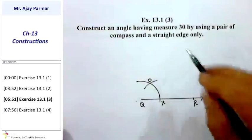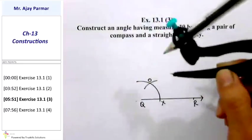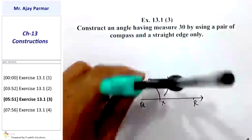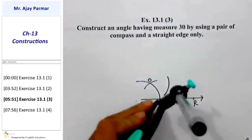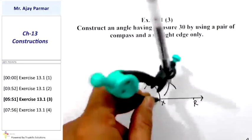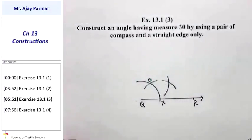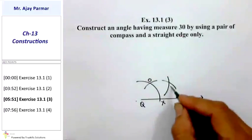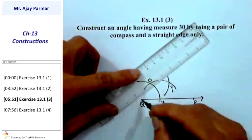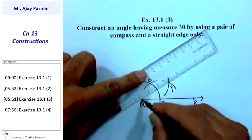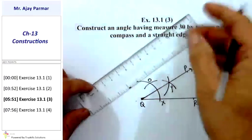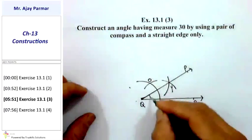I am not going to draw that ray yet. Without changing the radius, taking O as the center I will draw an arc somewhere in between O and X. Taking X as the center with the same radius, I will cut the original arc, and these arcs intersect each other at point Y. Drawing ray QP passing through Y gives us angle PQR of measure 30°.